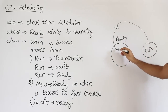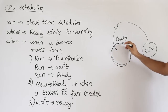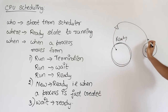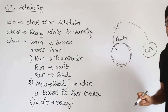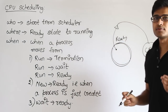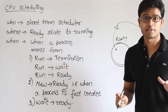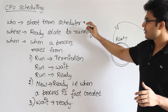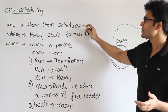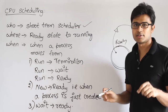Sometimes the short-term scheduler limits itself to picking up a process, and the actual context switching is handled by the dispatcher. That is one case. Either way, the short-term scheduler is the module which initiates the transition from ready state to running state.